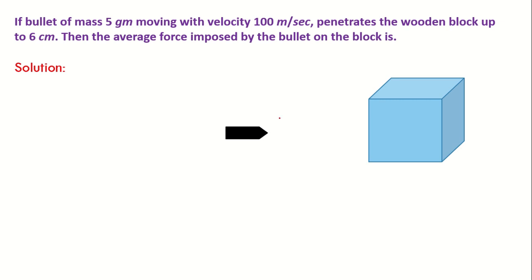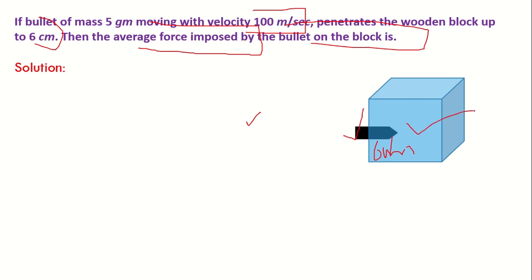In this question, there is a bullet of mass 5 grams moving with velocity 100 meters per second, and it penetrates the wooden block up to 6 centimeters. Then the average force imposed by the bullet on the block is, we have to find the average force induced by this bullet on this block.